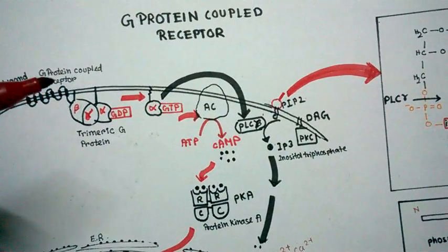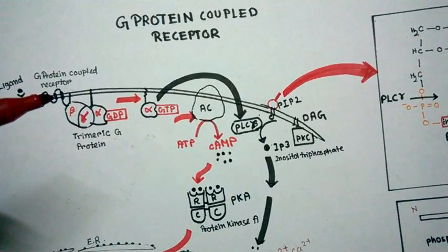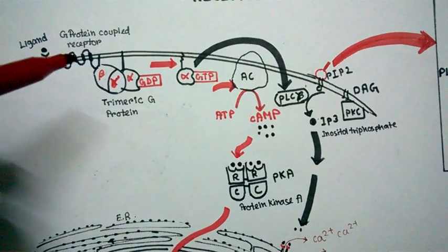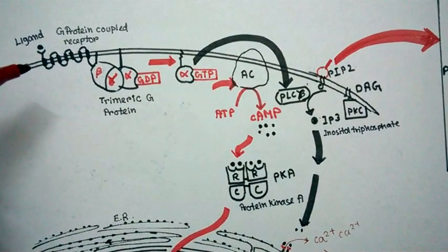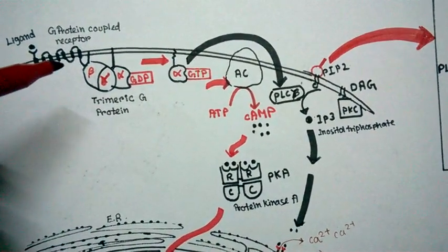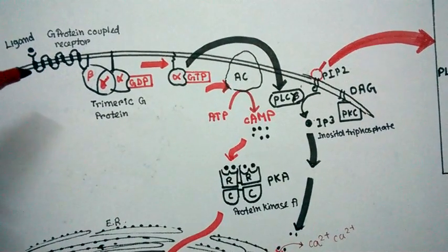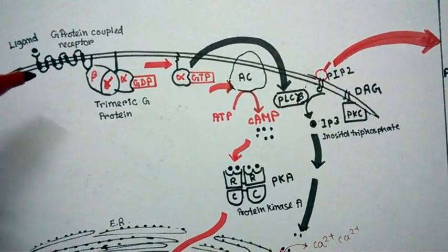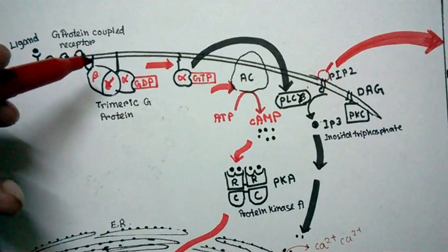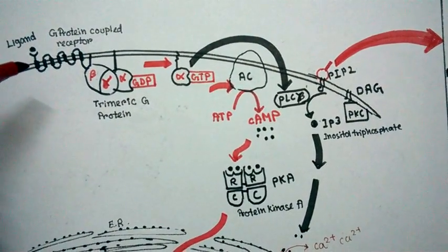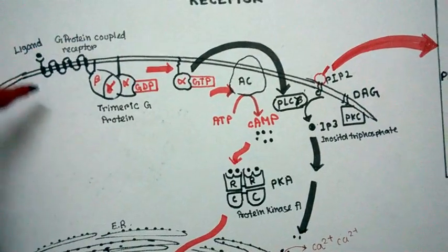In this video I'm going to talk about G protein-coupled receptors or GPCRs. On the surface of the cell membrane you can see a seven transmembrane domain receptor. Transmembrane is the portion which is incorporated inside the cell membrane. It has seven transmembrane domains, each containing alpha helices.